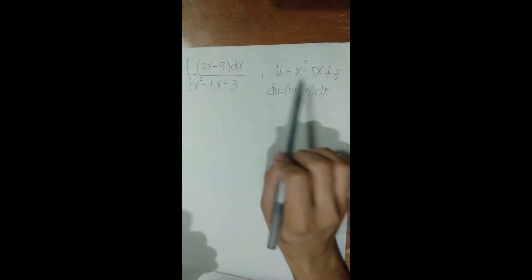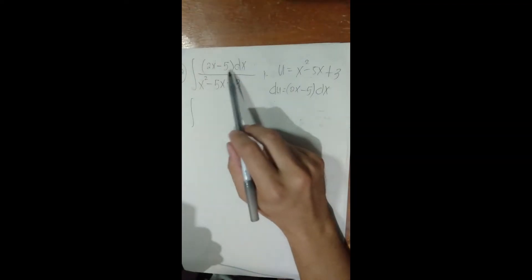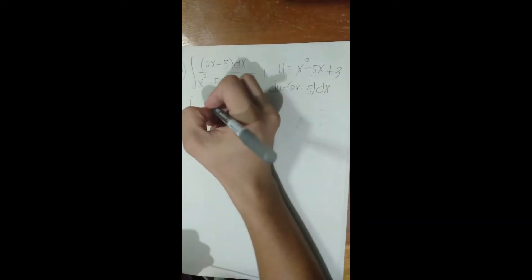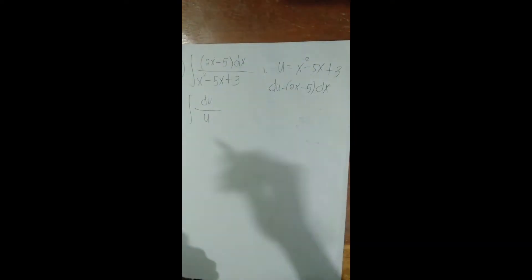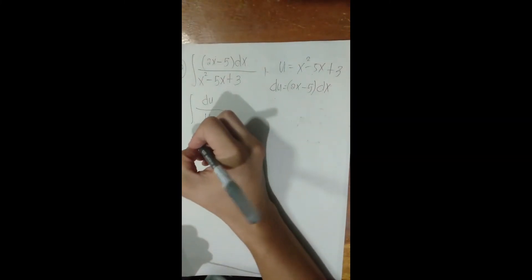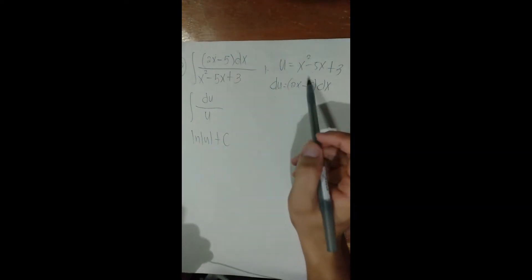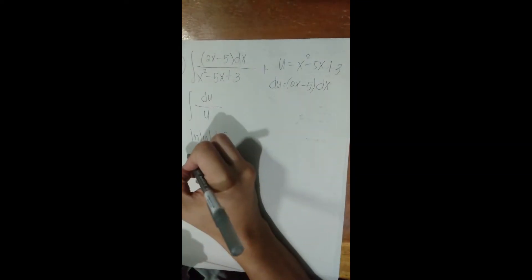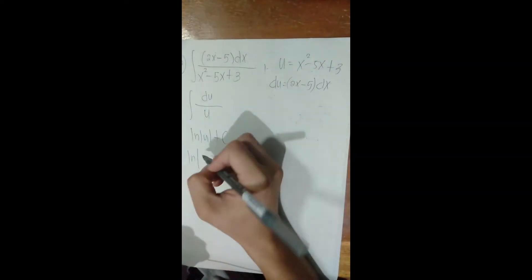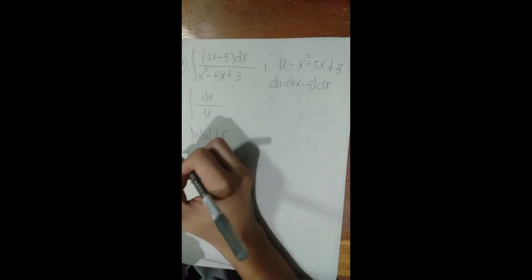Let u = x² − 5x + 3. Taking the derivative: du = (2x − 5) dx. Notice that (2x − 5) dx already appears in the numerator of our original function. By substituting (2x − 5) dx with du and (x² − 5x + 3) with u, the integral becomes simply integral of du/u, which equals ln|u| + C. Bringing back u: the final answer is ln|x² − 5x + 3| + C.